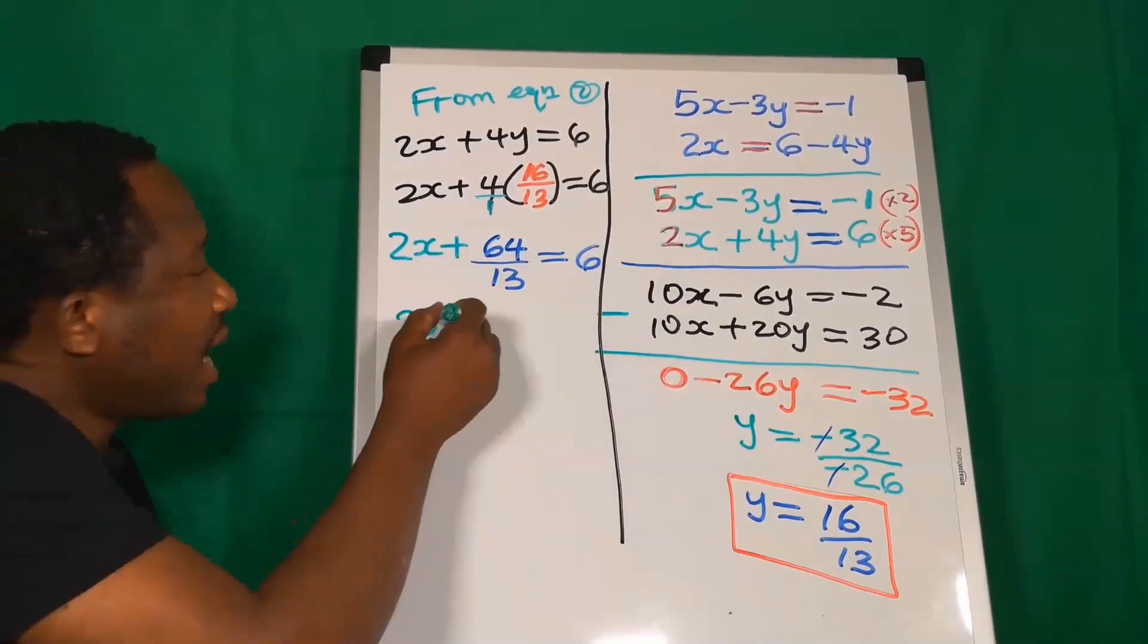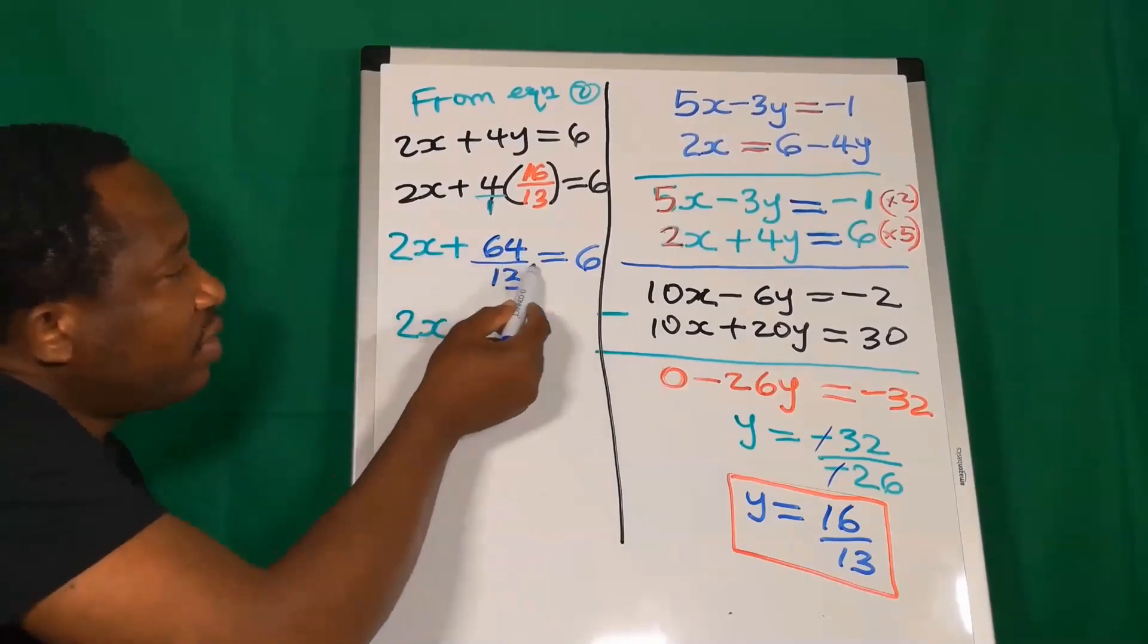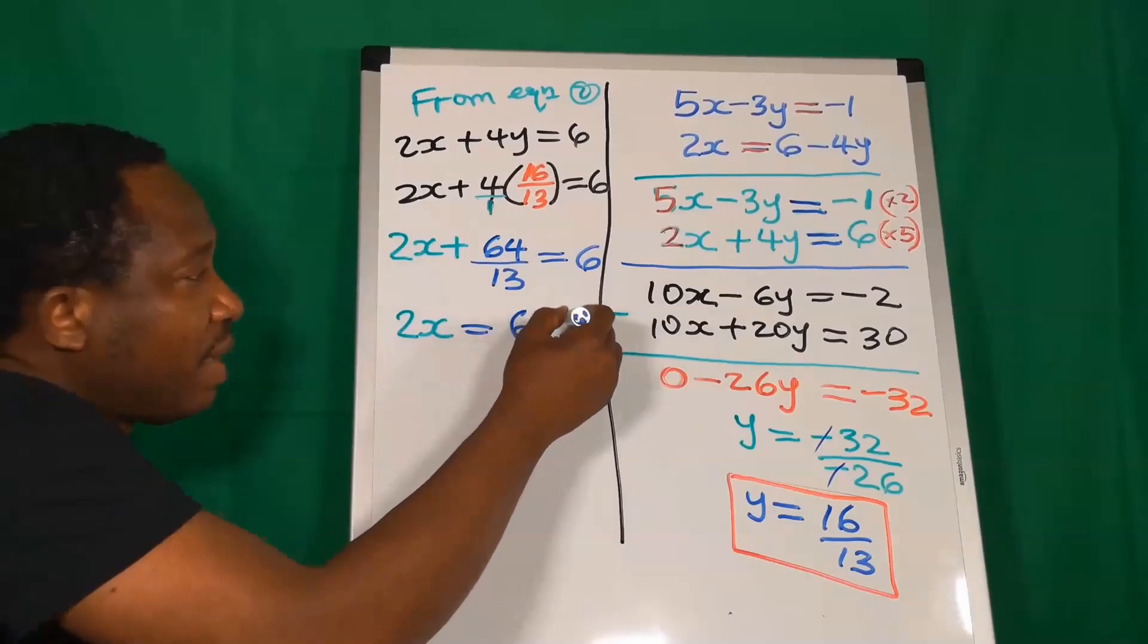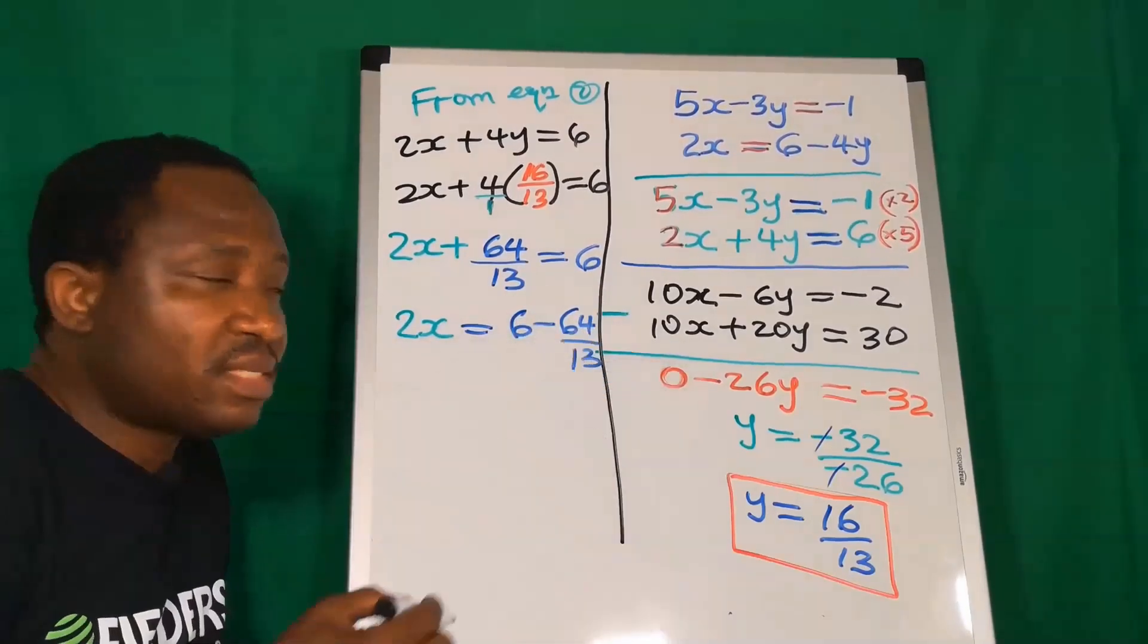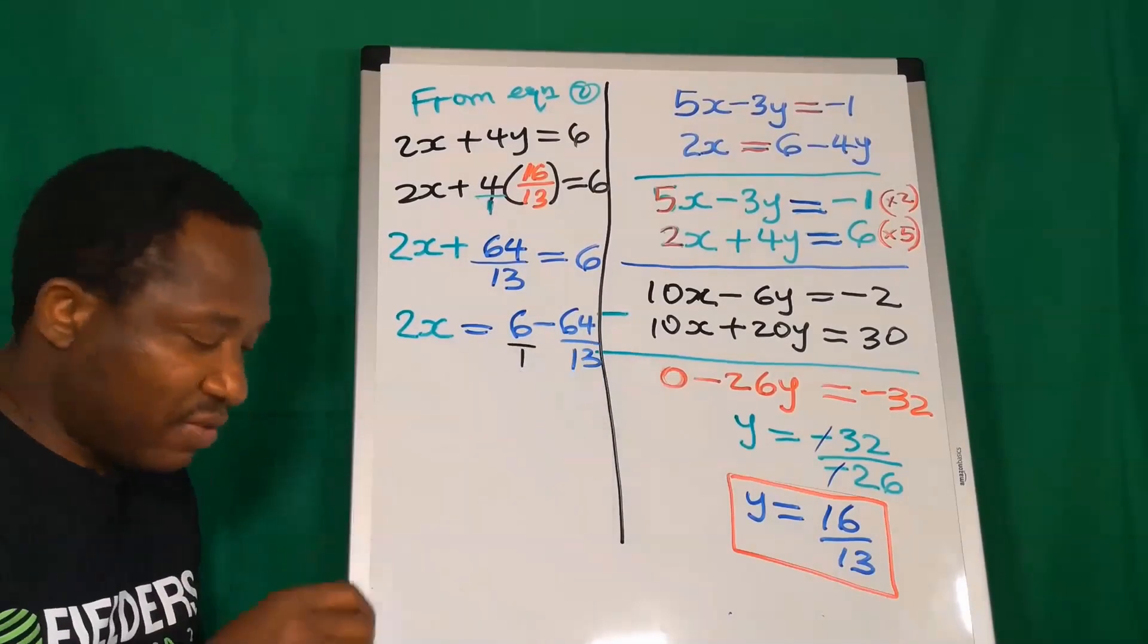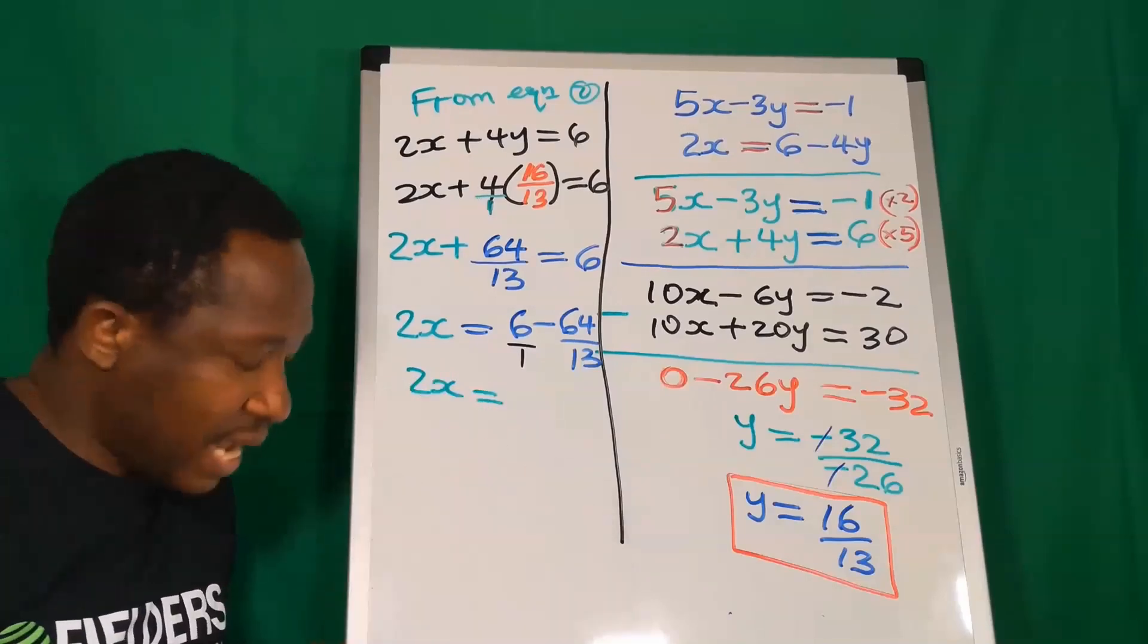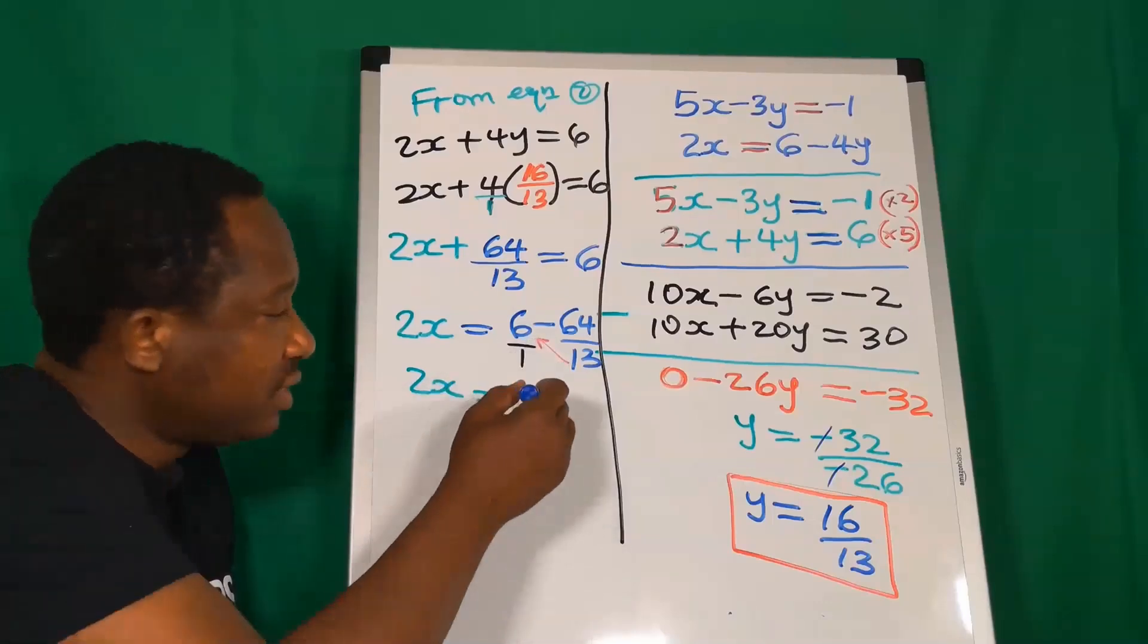Here, I have 2x. On the other side, I have 6. 64 divided by 13 will move over to the other side and become minus 64 over 13. Remember, this is like over 1. What we're going to have here, this is 2x. And on the other side, I'm going to have 13 multiplied by 6, I will have 78.